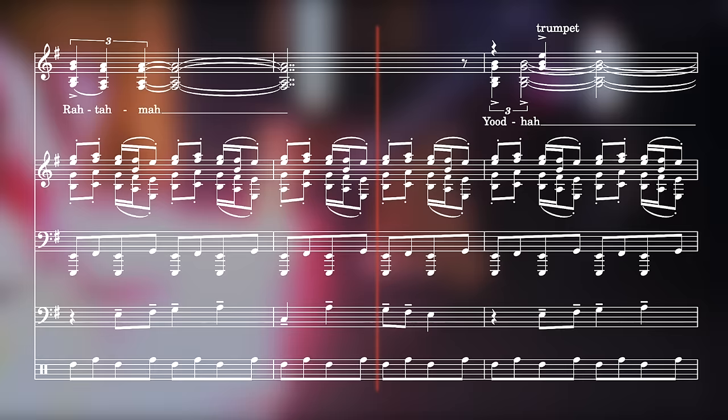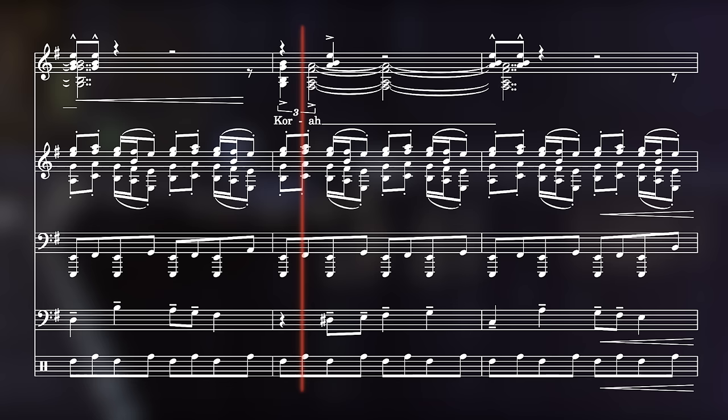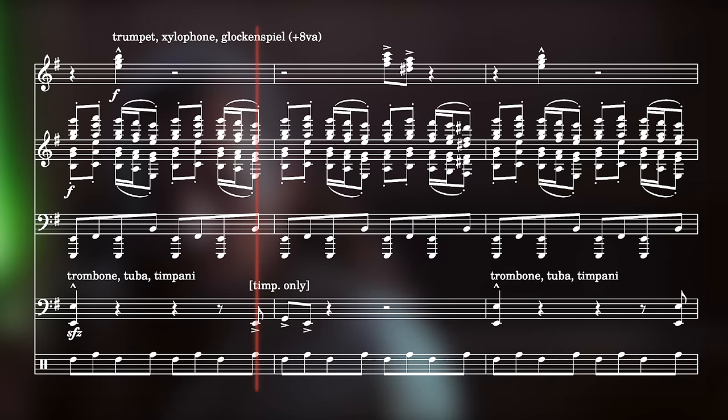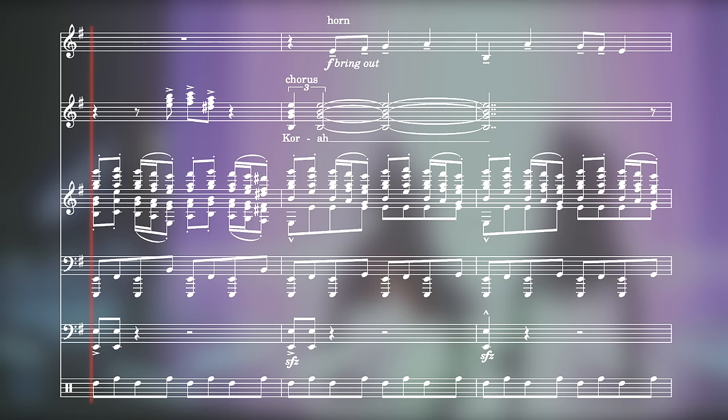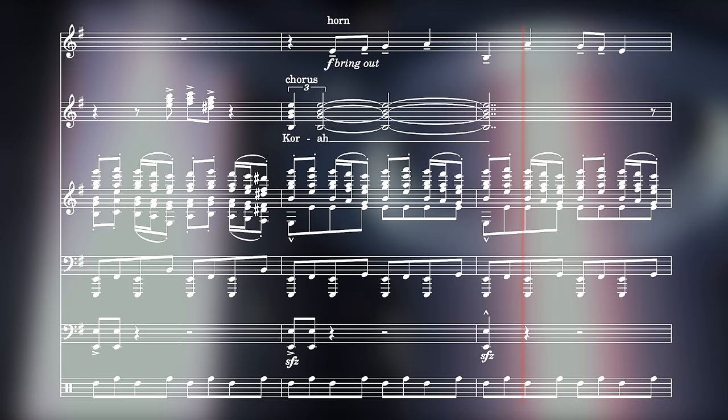The brass parts become busier, creating a mesh of metallic sound supported by the bass instruments, which are now playing on every beat of the bar. The orchestral melody is then played by tutti horns and trumpets, on top of the choral texture, setting up a sort of call and response between the two ideas.